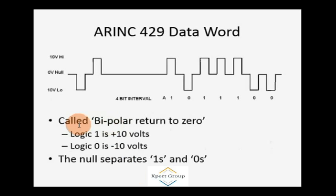How does the data travel? This is a string of data. Here you can see 10 volts high, 10 volts low, and 0 volts null. This is the reference point. This is a high bit, this is a low bit. This is logic 1, this is logic 0.